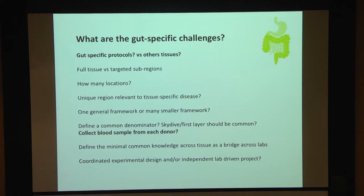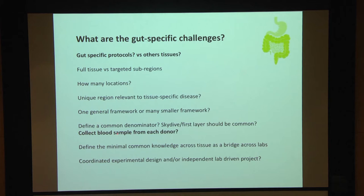We then discussed the idea of a common denominator — not just across gut labs, but across tissues — to see if we observe common cell signatures and quality, and to normalize using bridge samples. It was also suggested as very important not only to collect microbiome data from each gut sample, but also to collect blood samples from each donor and perform single-cell analysis on all blood cell populations as a normalizer or common sample.